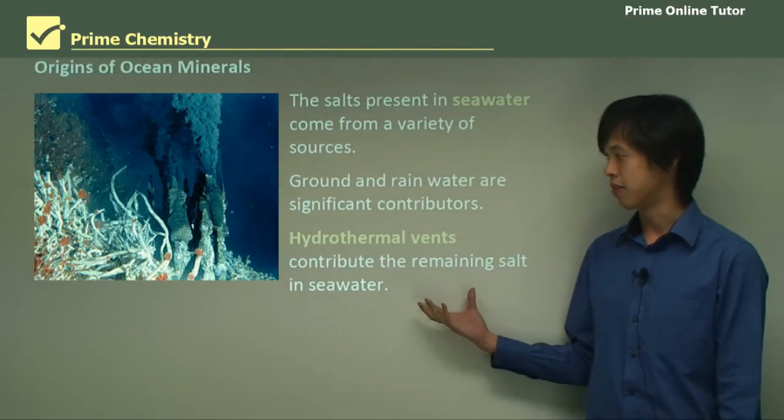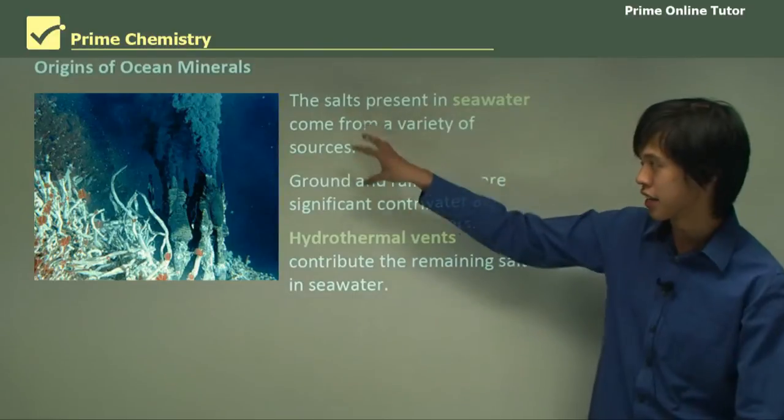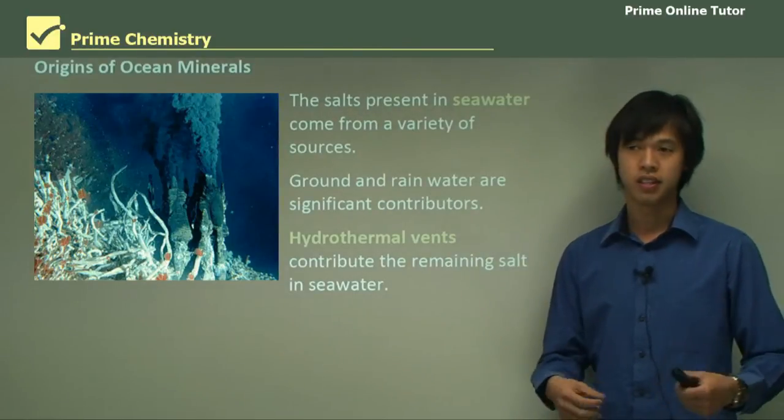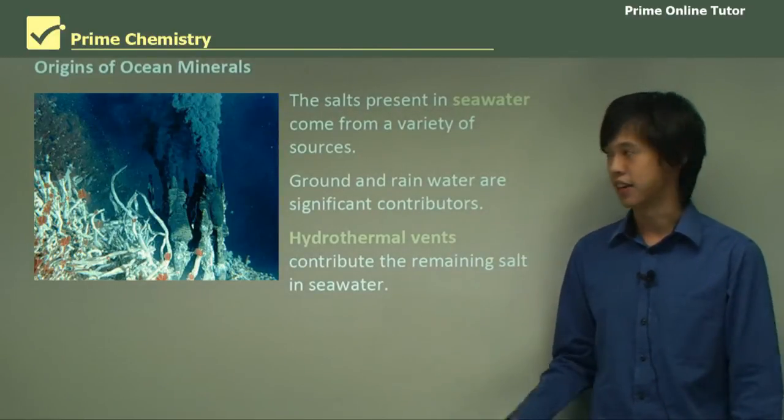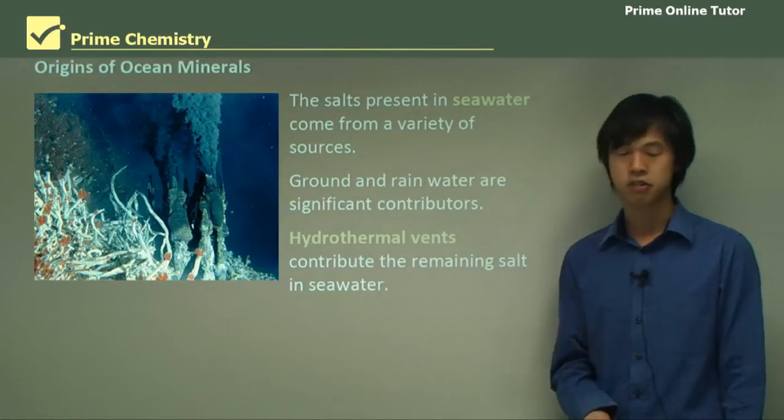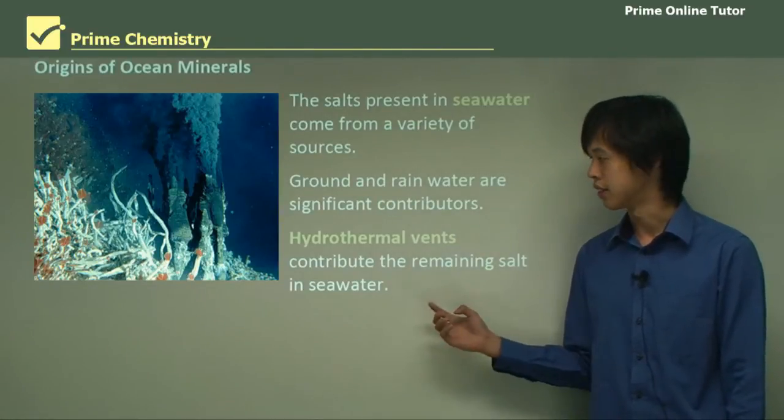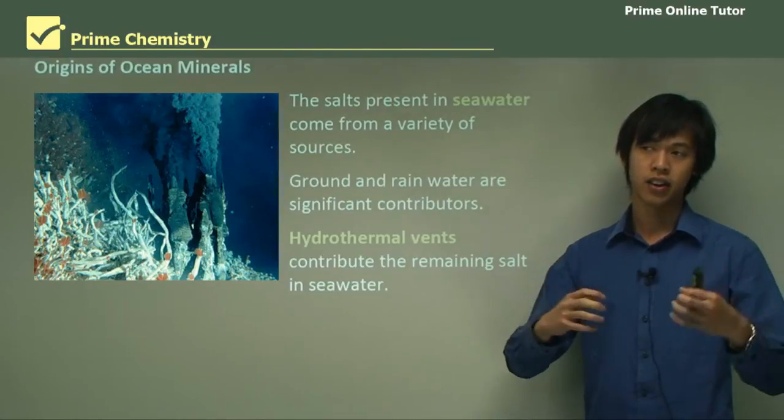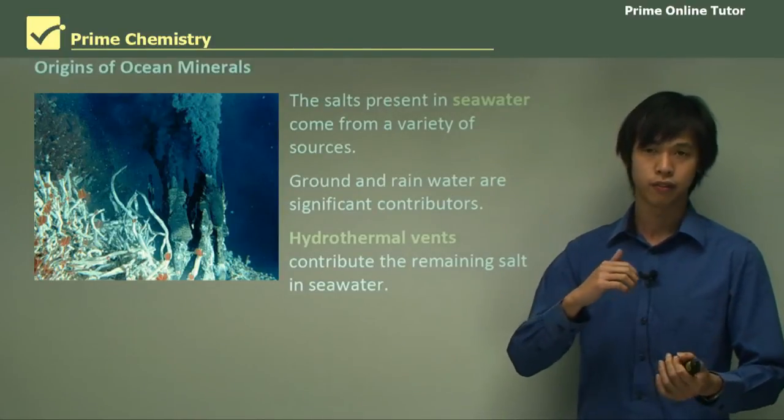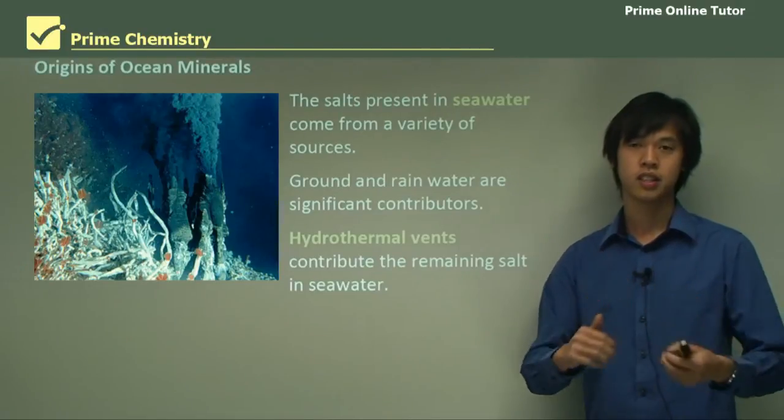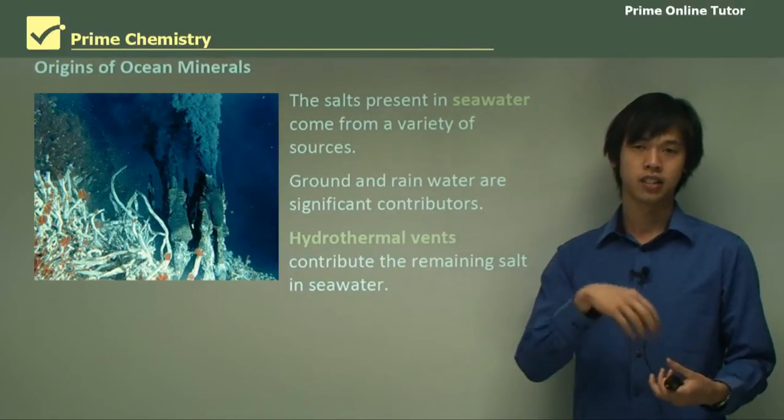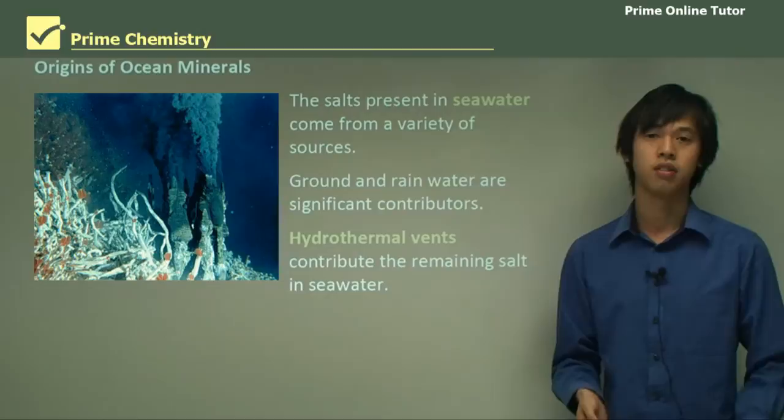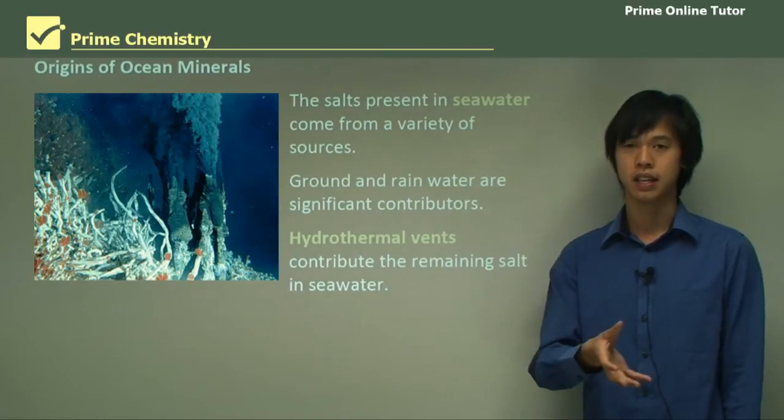Besides that, we have hydrothermal vents, which is this picture here. You can see that there's a spout of gas and other things coming out of it and that contributes the remaining salt and it's probably the biggest concentration. Hydrothermal vents are simply areas where there's a fissure in the crust and the water can actually get into or close to the molten magma in the mantle.